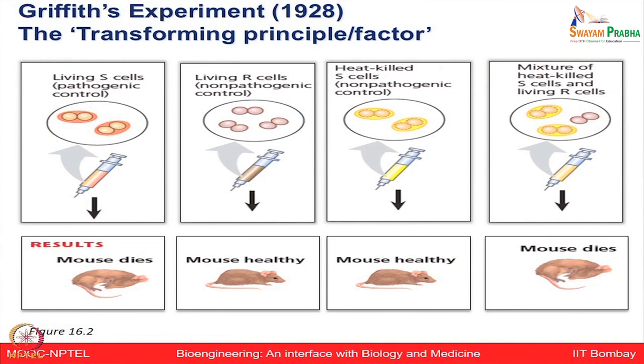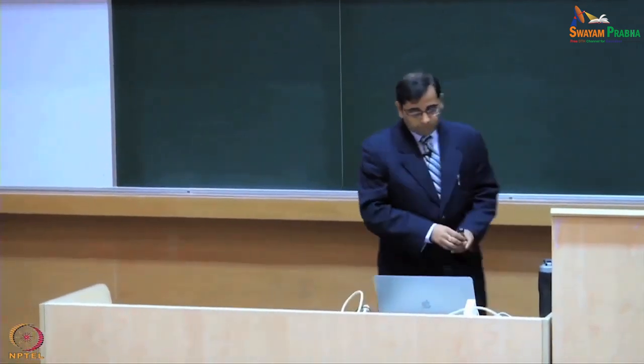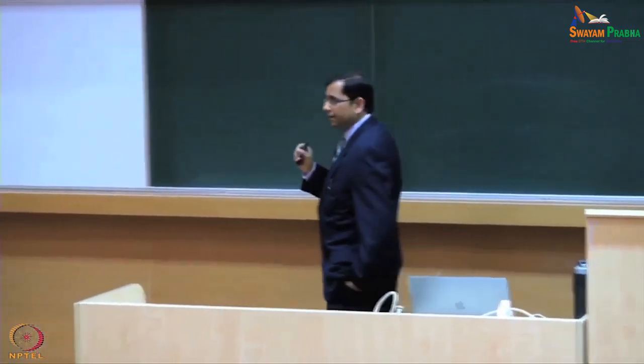The living R-bacteria acquired some substance from the heat-killed S-cells — a transformation happening in this particular type of bacteria. This unexpected phenotype led Griffith to realize that some material could be transformed, resulting in what is known as Griffith's transforming principle — the DNA or transforming factors.